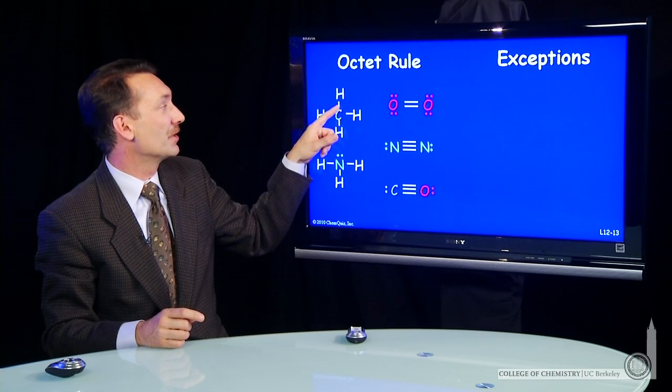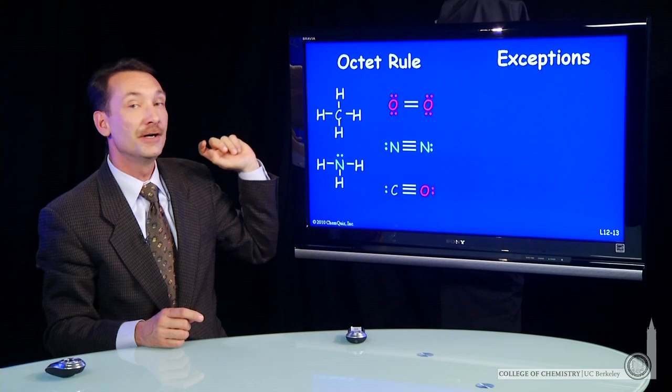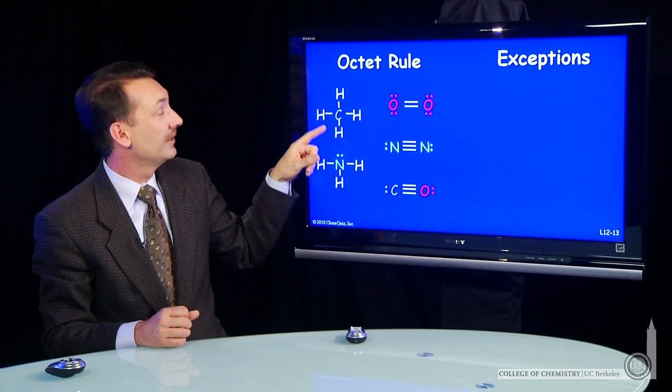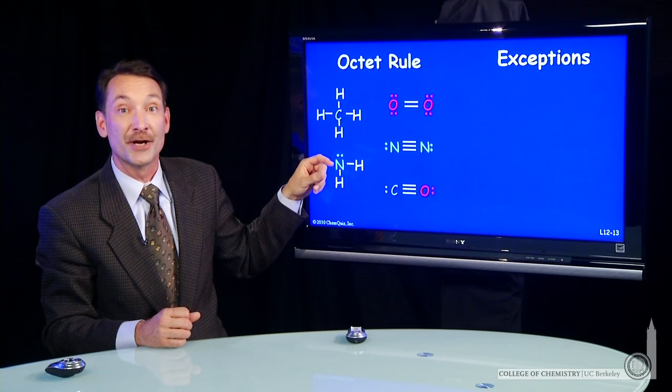Carbon says, I'll share one with you, I'll share one with you, I'll share one with you, and one with you. And what I'll end up with is a carbon with an octet. And here, instead of the dots, I've drawn a single line to indicate the pair of electrons.